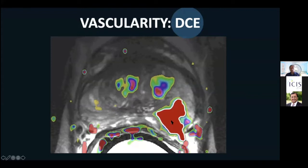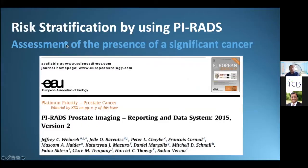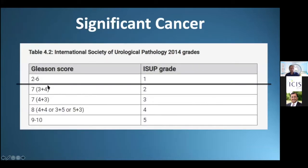What is the indication for prostate MRI? Prostate MRI is a risk stratification tool using a standardized method: PI-RADS. PI-RADS describes the assessment of the presence of a significant cancer. Urologists consider a Gleason score 3+3, which is ISUP grade 1, as non-significant. If there is a 4-component or higher, then it is a significant tumor. ISUP grade 2 or higher is considered a significant cancer.